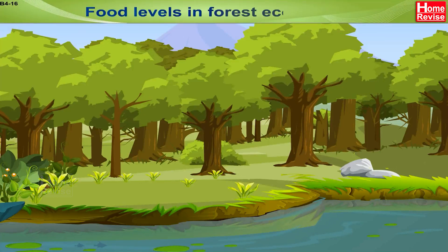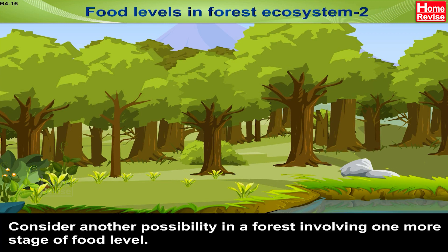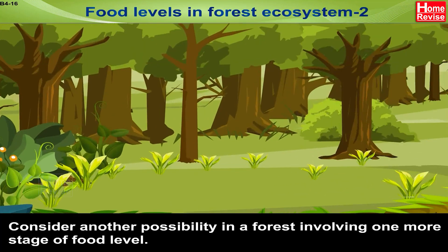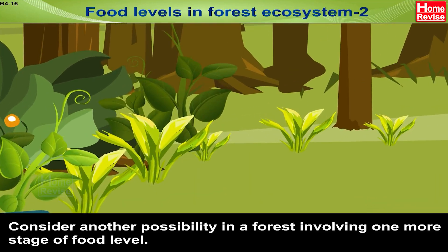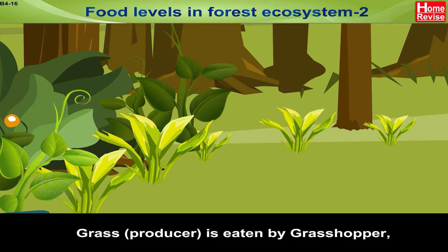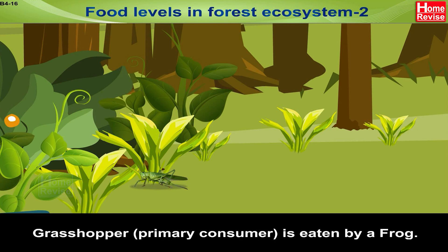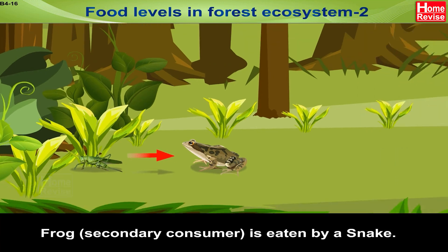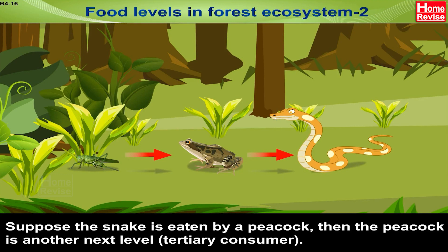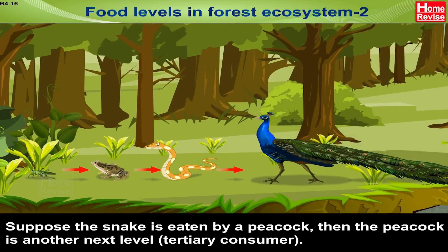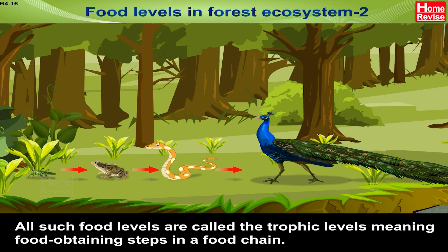Consider another possibility in a forest involving one more stage of food level. Grass (the producer) is eaten by a grasshopper (the primary consumer), which is eaten by a frog (the secondary consumer), which is eaten by a snake. If the snake is eaten by a peacock, the peacock is the tertiary consumer. All such food levels are called trophic levels, meaning food-obtaining steps in a food chain.